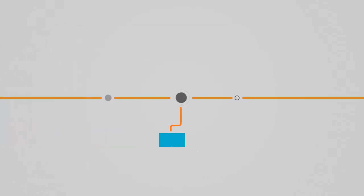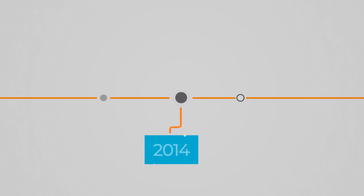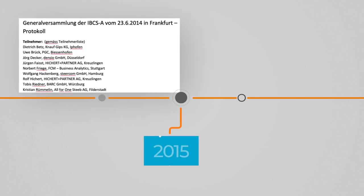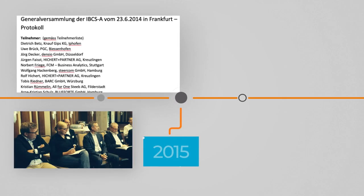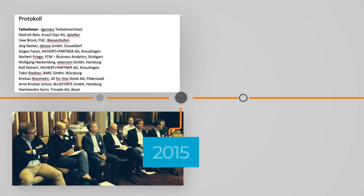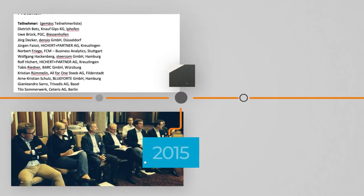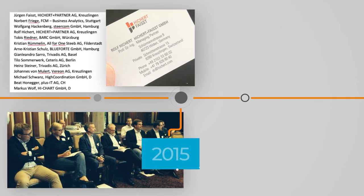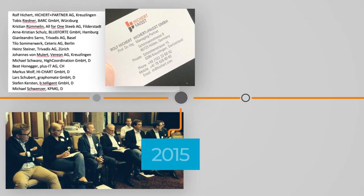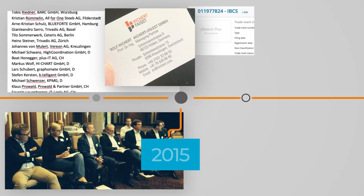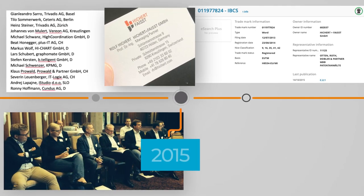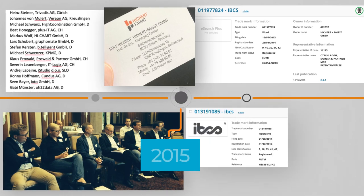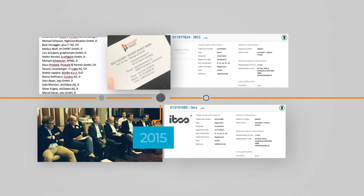In 2014, three important things happened: first, our first IBCS general assembly in Frankfurt; second, the foundation of the new company Hichert and Feist in Düsseldorf; and third, we finally received the trademark IBCS as a word as well as the IBCS logo.